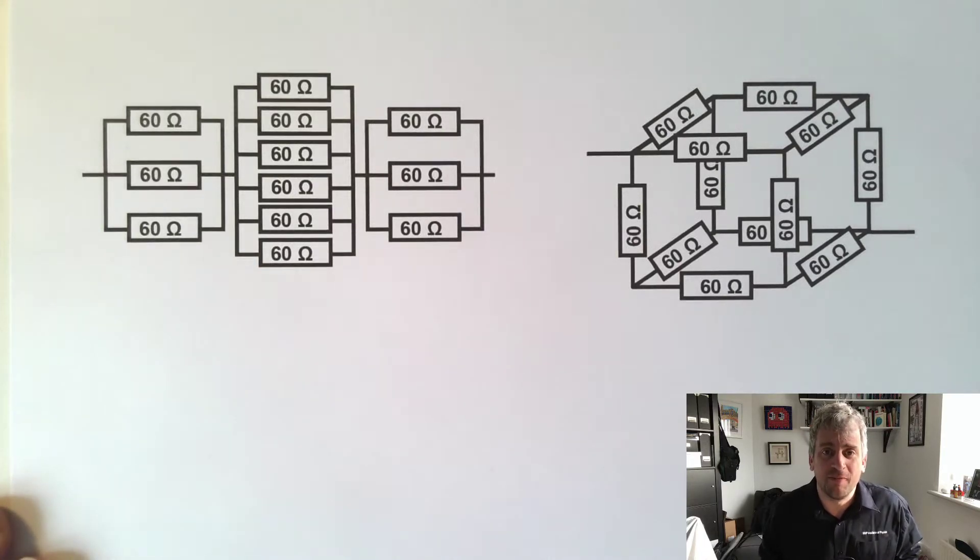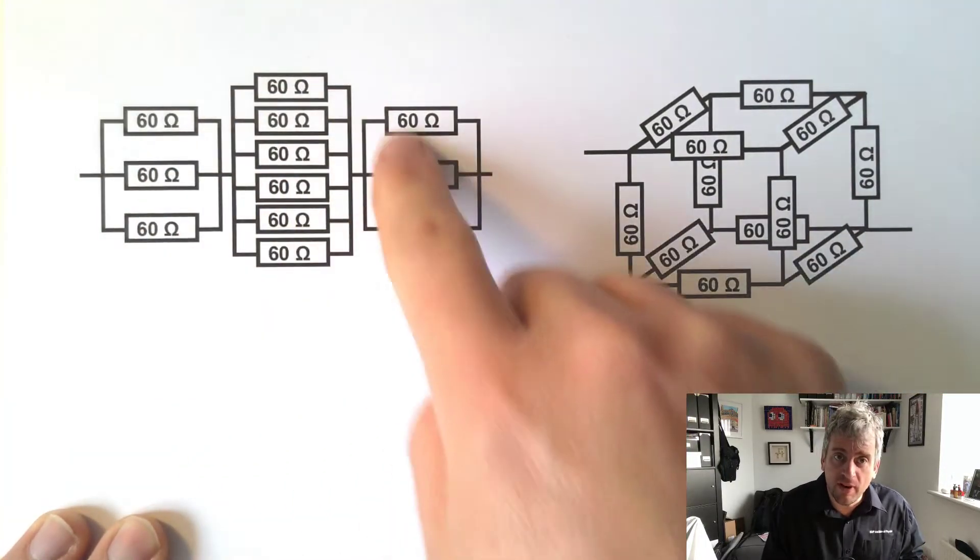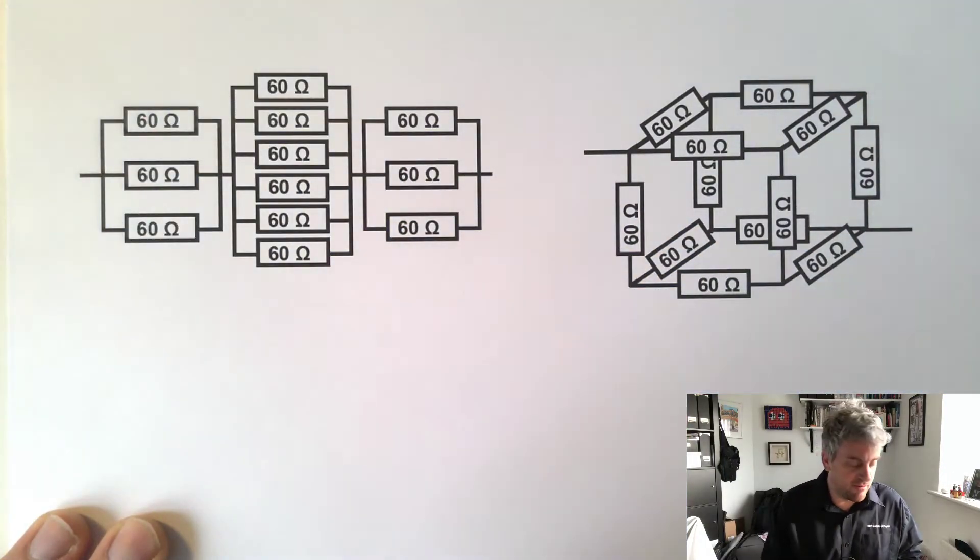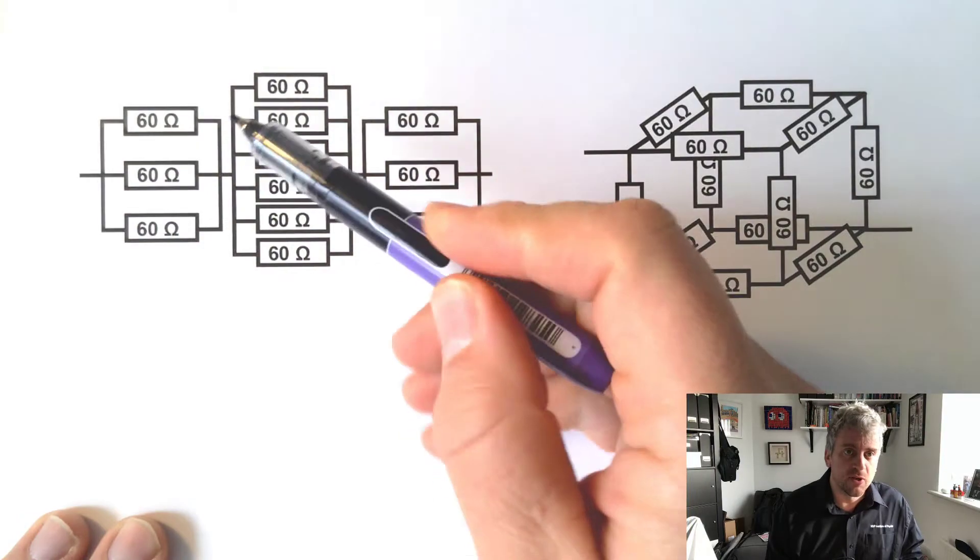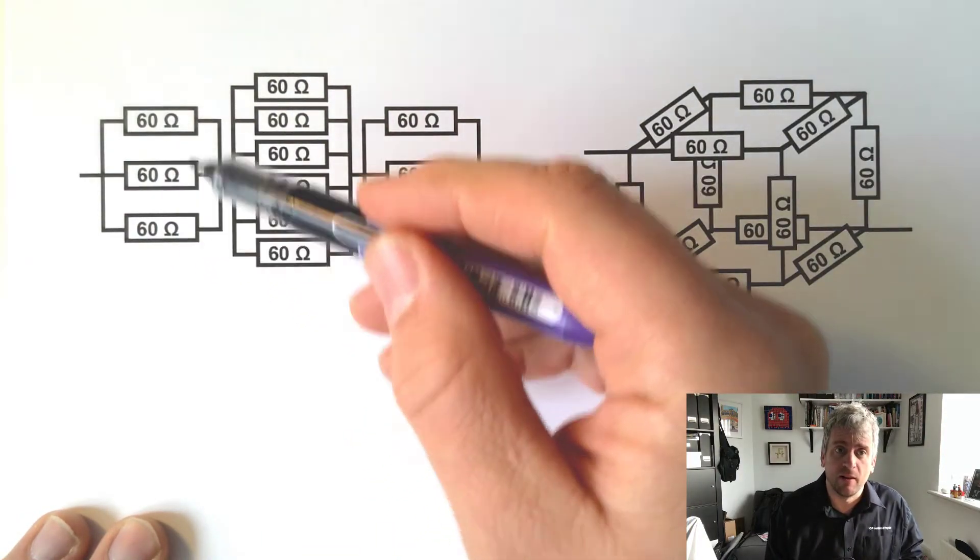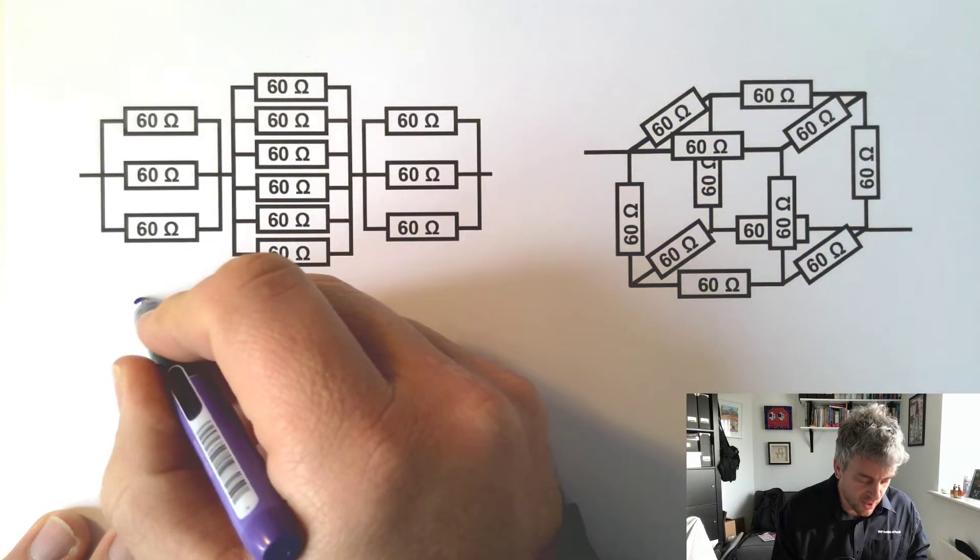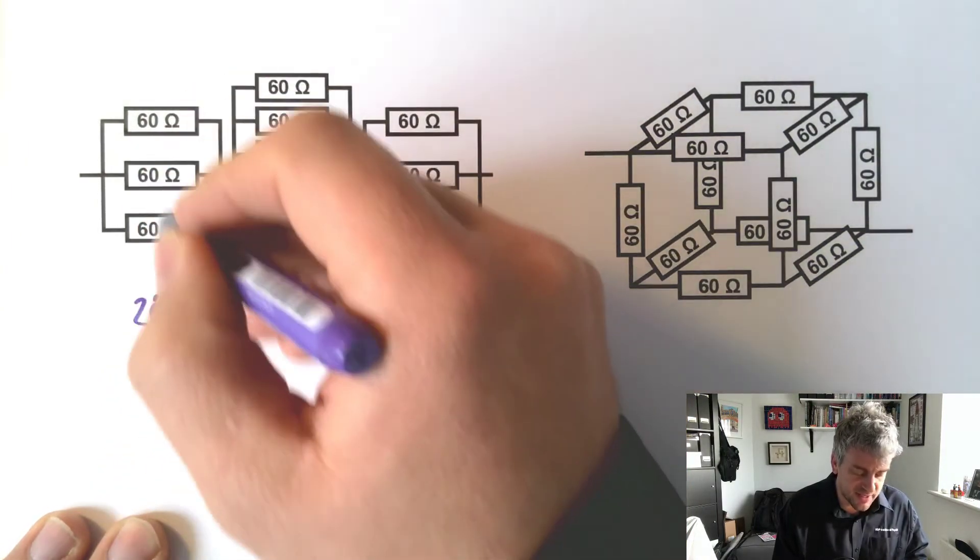Okay, so hopefully you've been having some fun trying to solve some of these. This one on the left-hand side is meant to be relatively straightforward because we've got three resistors, but they're identical resistors in parallel. So the total resistance should be a third. We can work out the total resistance there should be 20 ohms.